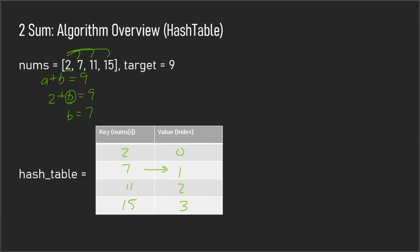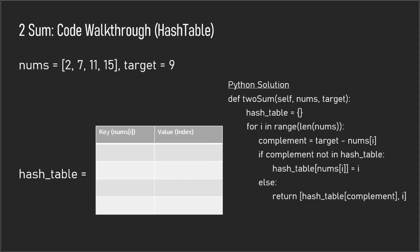Now I'll go through an even better solution: we can actually do this in one pass. I have the code over here to the right. Walking through it: we start at the first index, value 2, calculate the complement which is 7. If the complement is not in the hash table, we add the current element — so we add 2 with index 0. On the second iteration, the value is 7, its complement is 2, and we check if 2 is in the hash table. It is, so we've found our answer.